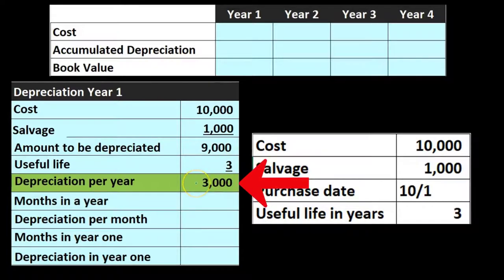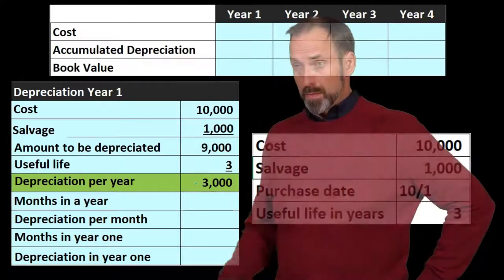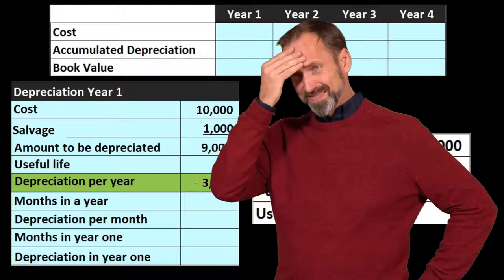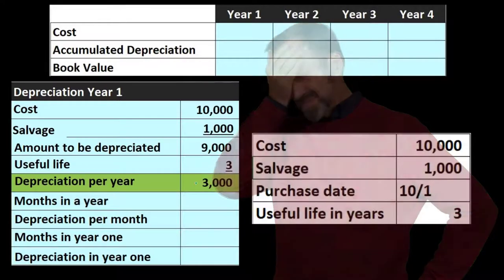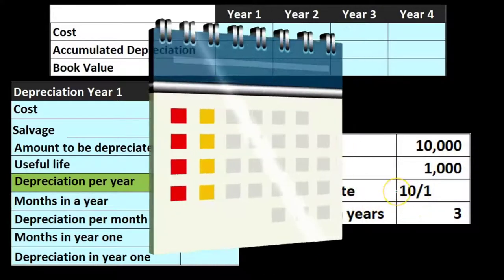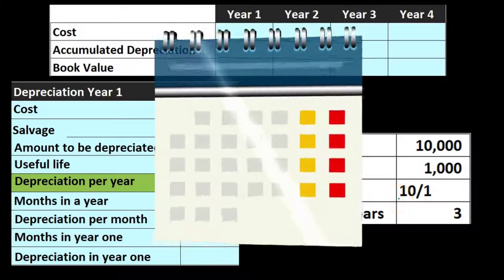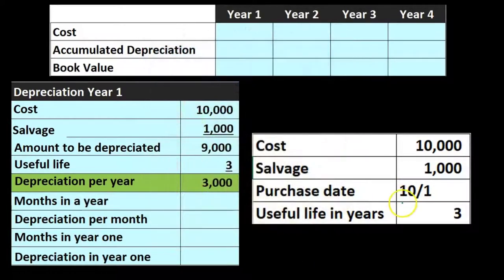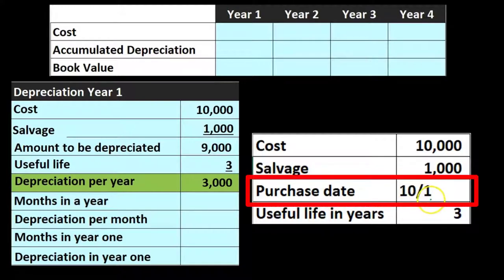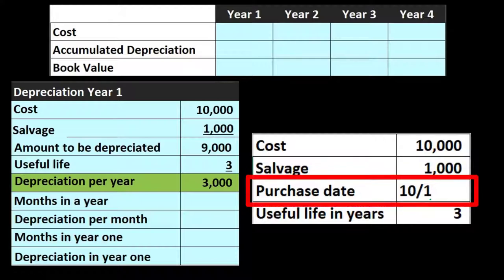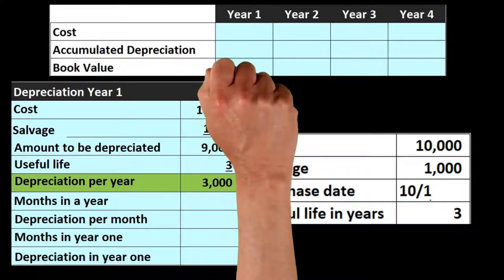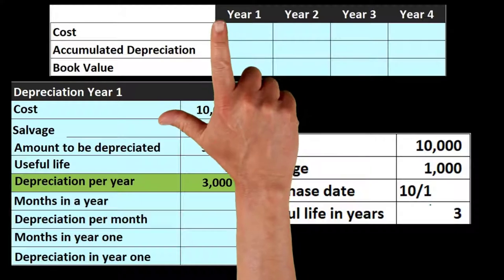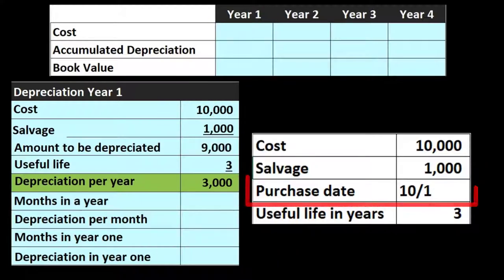Our depreciation per year is $3,000. Now our problem is that we didn't buy it at the beginning of the year — we bought it in October. When you figure out the number of months it was used, note that it's October 1st, the beginning of the month, so you have to include October when counting. Counting on your fingers: October, November, December — that's three months.